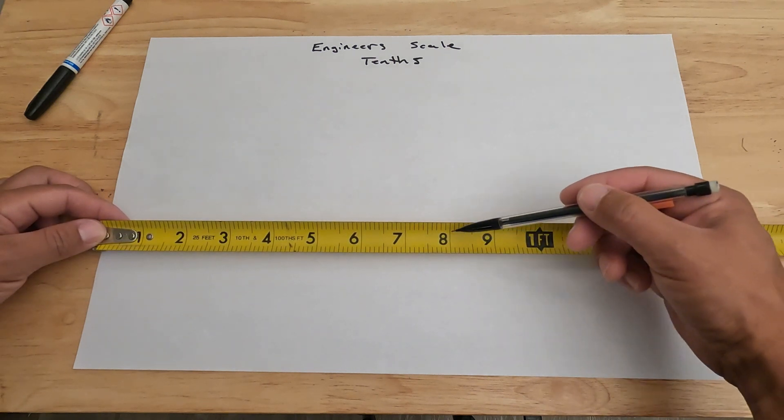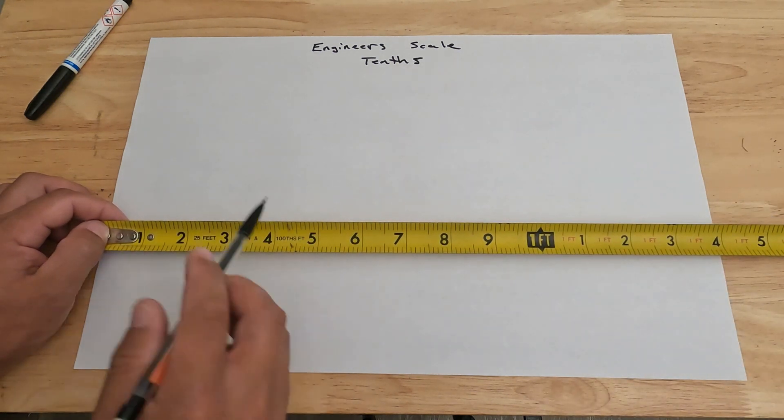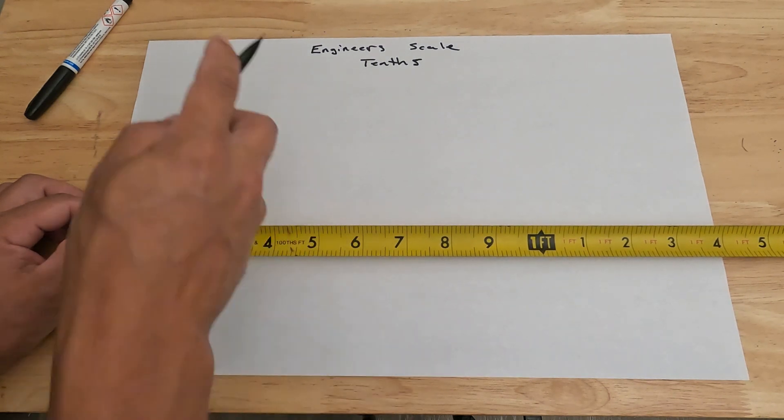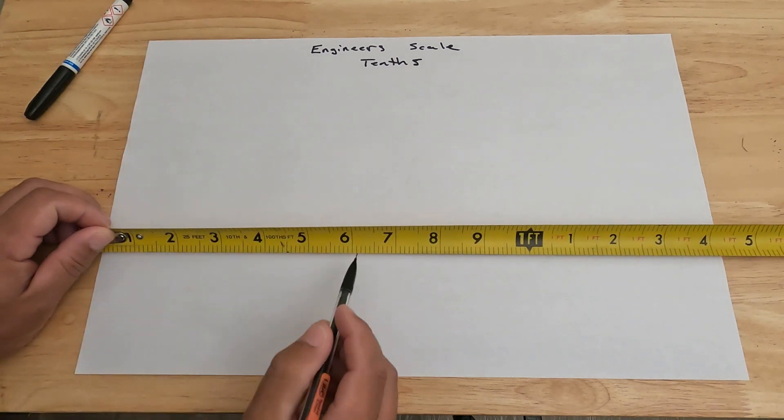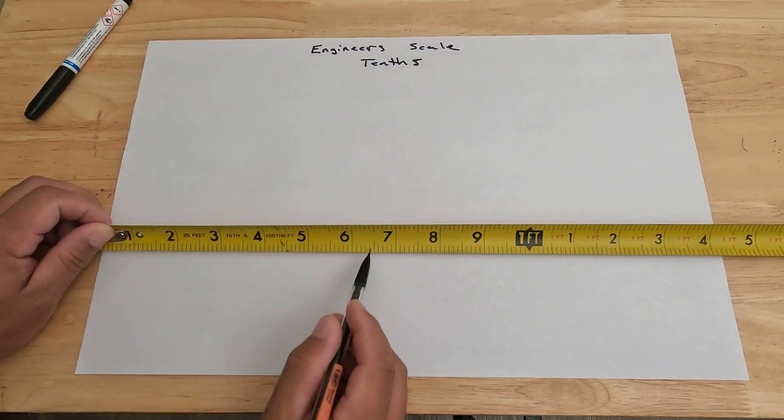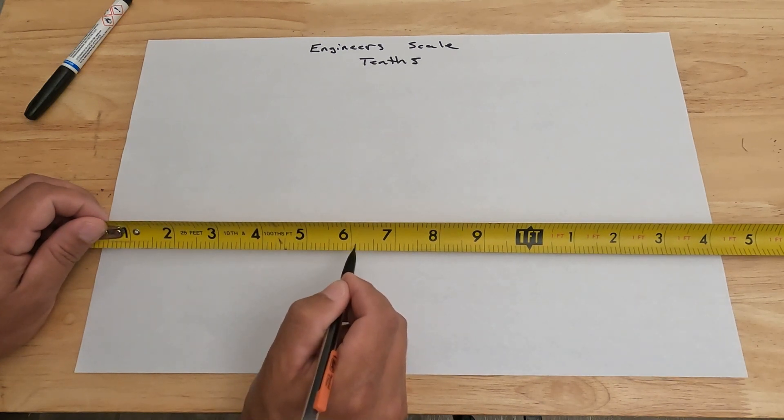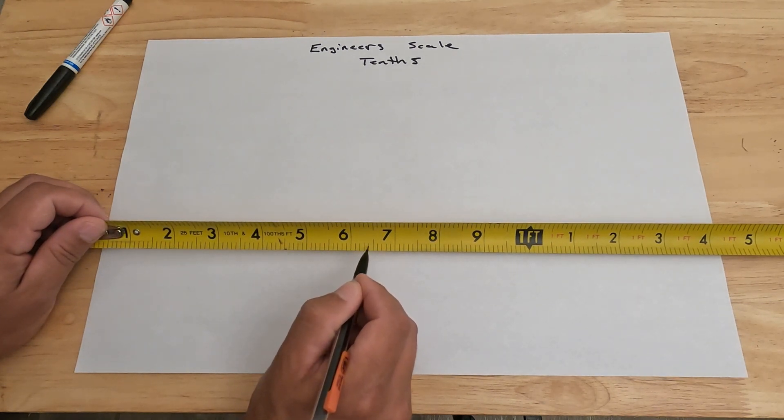That being said, we'll get right into it. Like I said, it takes a foot and breaks it up into 10 pieces. Those 10 pieces are called tenths. So this would be a tenth. And then each individual tick mark, there's 10 of them in a tenth, and each individual tick mark is called a hundredth.